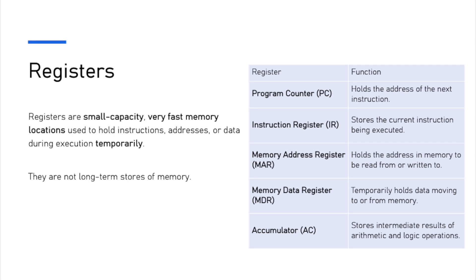To help the CU and the ALU do what they need to do, there are a number of registers. Registers are small capacity, very fast memory locations normally used to hold instructions, addresses, or data during the execution phase temporarily. They don't store things long term — just temporarily so the CU or the ALU can do what they need to do. The first one is the program counter (PC), which holds the address of the next instruction. For example, in RAM there would be address 1001, and that's where you need to go to start the program — that address is stored in the program counter.